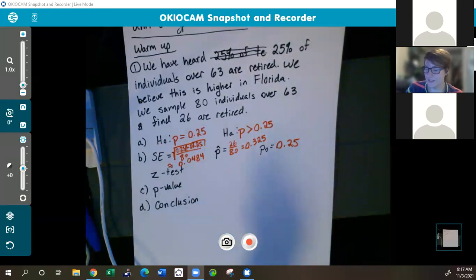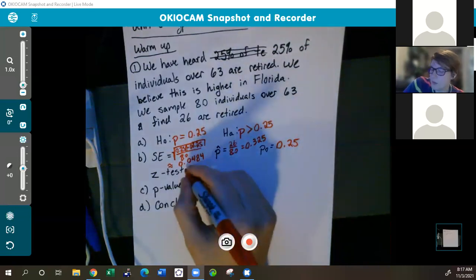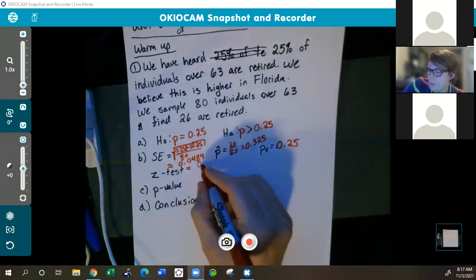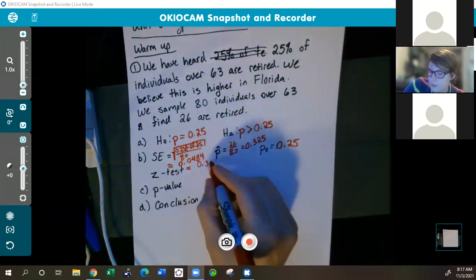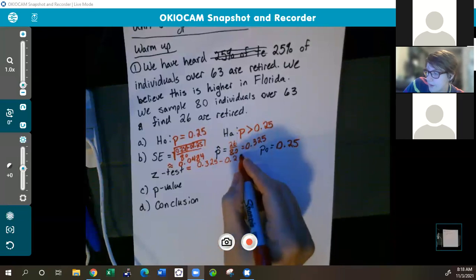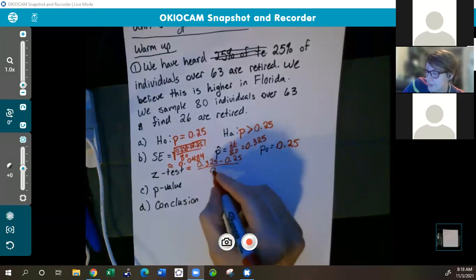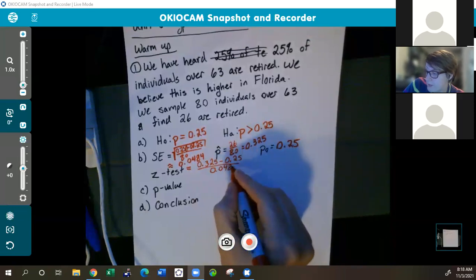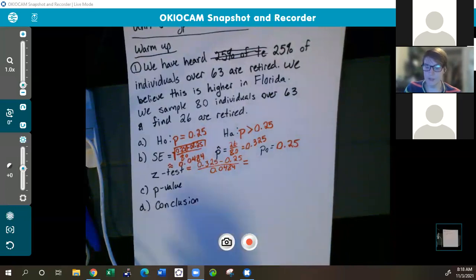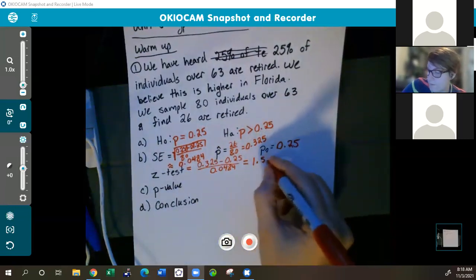Lastly, we need to figure out our z-test statistic, because that's the thing that we're going to need to find the p-value. So that's comparing our samples to the perceived population value. For that one, we're going to have 0.325 minus 0.25, all divided by that standard error of 0.0484. And when you guys do that, you're going to round to two decimal places because that's as many decimal places as you can use on that z-table. So you should get 1.55.